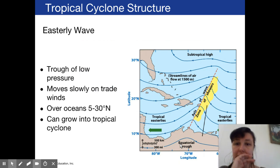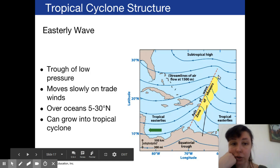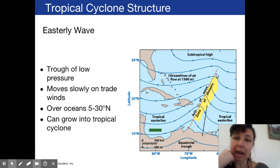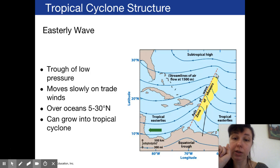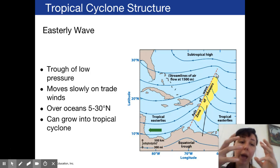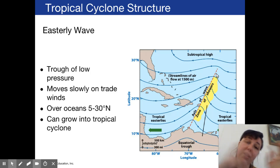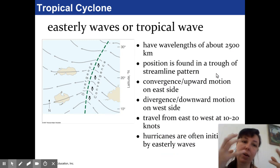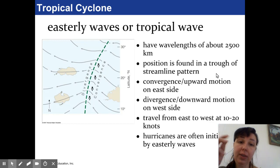So we go from tropical disturbance to tropical depression. On an isobar map, easterly waves appear as wavy millibar lines — they literally look like waves. They form in a trough of low pressure, move slowly on the trade winds, and can occur in oceans between 5 and 30 degrees north latitude. They are what forecasters watch as a signal for potential large storms or tropical cyclones. Easterly waves can be incredibly large — up to 2,500 kilometers long — meaning one wave can generate more than one storm throughout a hurricane season.